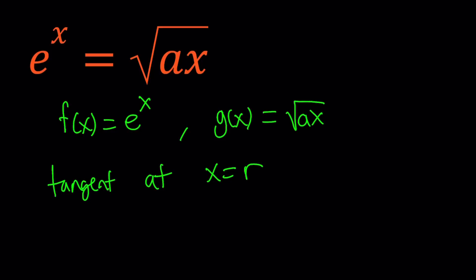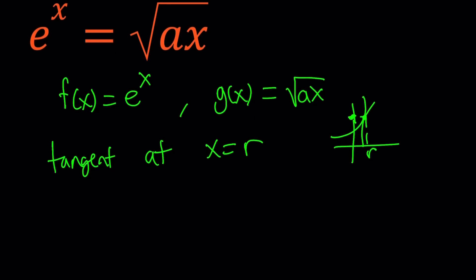then this implies the following. So you're talking about two curves. If two curves are tangent, basically what's going to happen is that they're going to take the same y value at that point. So if this is r, this is f of r, but at the same time, it's g of r.